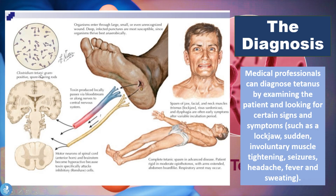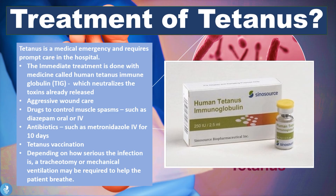Clostridium tetani are gram-positive, spore-bearing rods that enter the patient's body through a puncture or wound site, usually contaminated with animal feces, soil, dust, or rusty objects such as nails. This wound or puncture site is a very good thriving spot for anaerobic bacteria. The toxin is produced locally at this site, passes into the bloodstream along to the central nervous system, and the motor neurons of the spinal cord and brainstem become hyperactive because the toxin specifically attacks the inhibitory cells, causing severe muscle spasms throughout the body.